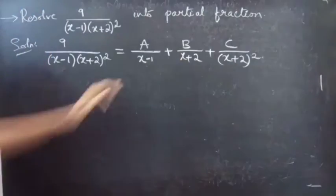We will get 9 by (x minus 1)(x plus 2) whole square equals A by (x minus 1) plus B by (x plus 2) plus C by (x plus 2) whole square. Now consider the first term — in the first fraction you are having denominator (x minus 1). Other than this (x minus 1), you are having (x plus 2) whole square in the denominator. So you have to multiply (x plus 2) whole square to A.